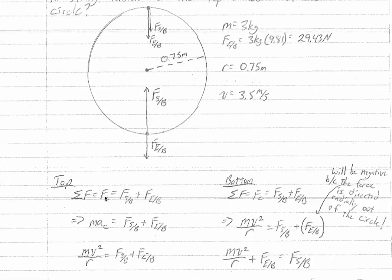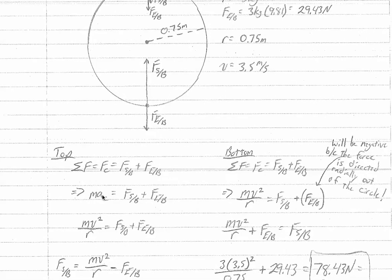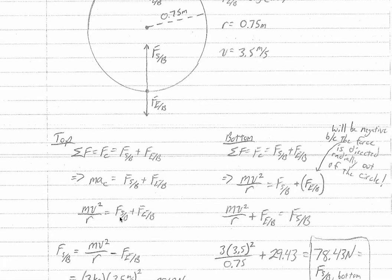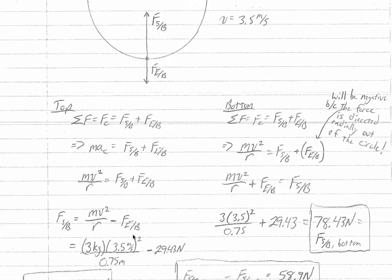Subbing in what we know, force equals mass times acceleration, so mass times centripetal acceleration equals the force of the string plus the force of the earth on the bucket. Substituting further, since centripetal acceleration equals v squared over r, we get mv squared over r equals force of the string plus force of the earth. Solving for the force of the string gives us mv squared over r minus the force of the earth on the bucket.